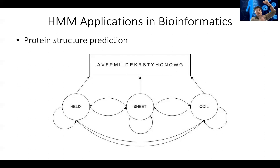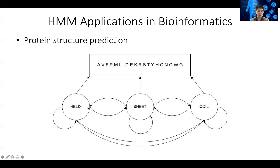Alpha helix is like a helix. Beta sheets are like up and down strands. And coil is the spacer connecting them. Usually when you are in one secondary structure, it's more likely to stay in the same structure, but there is a small probability it will transition to the other two. At each secondary structure, there is also the probability of emitting different amino acid sequences.